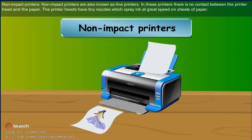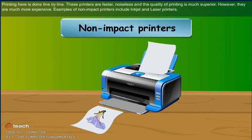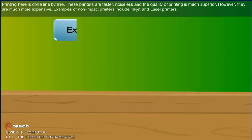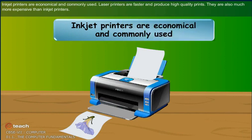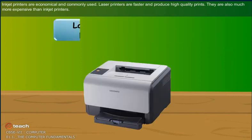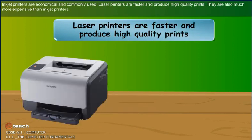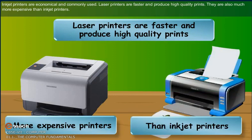Non-impact printers are also known as line printers. In these printers, there is no contact between the printer head and the paper. The printer heads have tiny nozzles which spray ink at great speed on sheets of paper. Printing is done line by line. These printers are faster, noiseless and the quality of printing is much superior; however, they are more expensive. Examples of non-impact printers include inkjet and laser printers. Inkjet printers are economical and commonly used, while laser printers are faster, produce high quality prints, and are more expensive than inkjet printers.